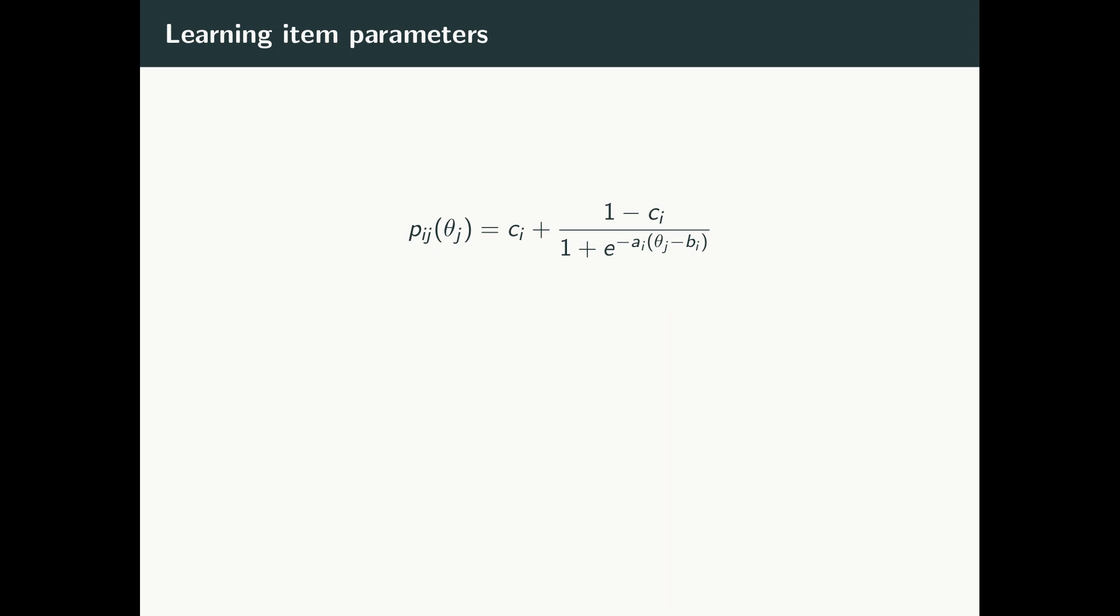So, how do we learn these latent item and individual parameters? Starting with P, we also have Q, which is just 1 minus P, and represents the probability that individual J will answer item I incorrectly. Now, the likelihood function for a set of individuals' responses to a set of items is shown here, where Y is equal to 1 if individual J answers item I correctly, and 0 if they do not. To learn the item and individual parameters typically involves marginal maximum likelihood using an expectation maximization algorithm.